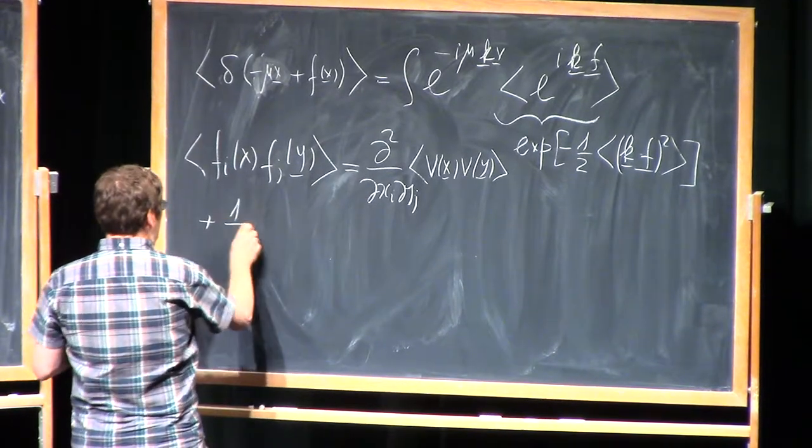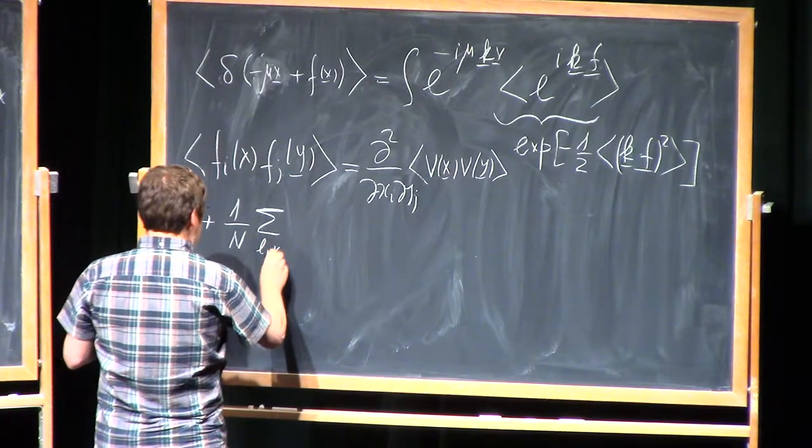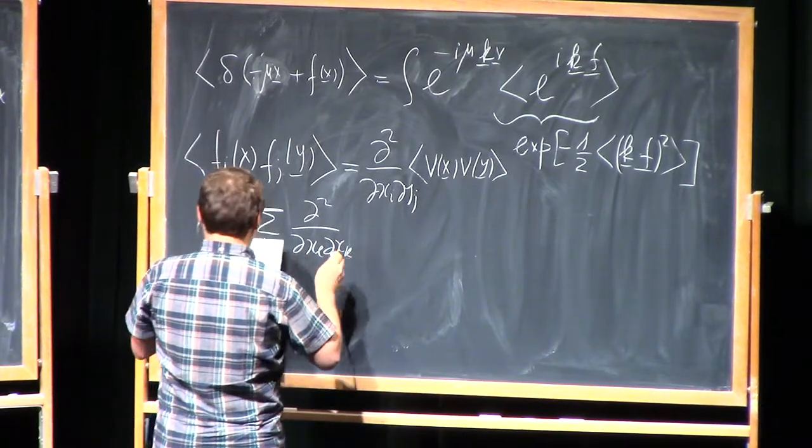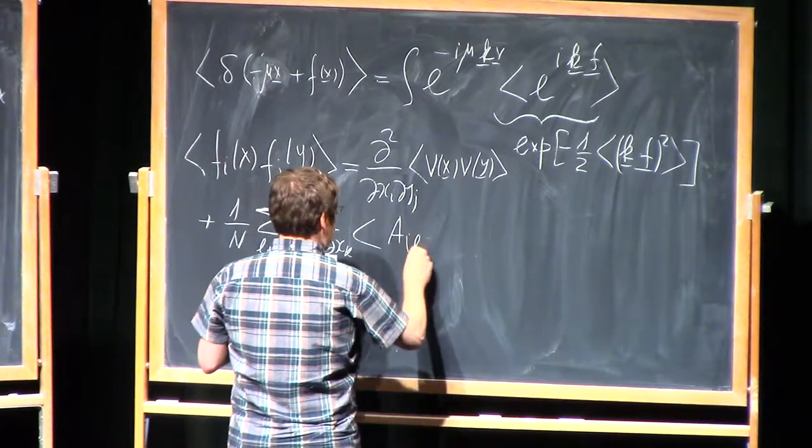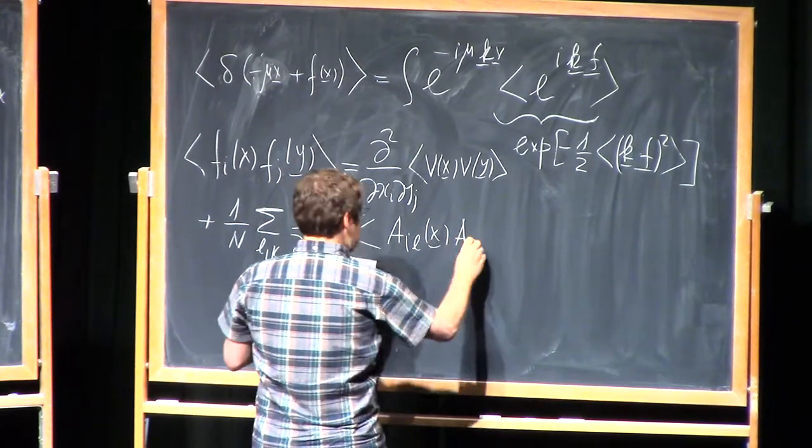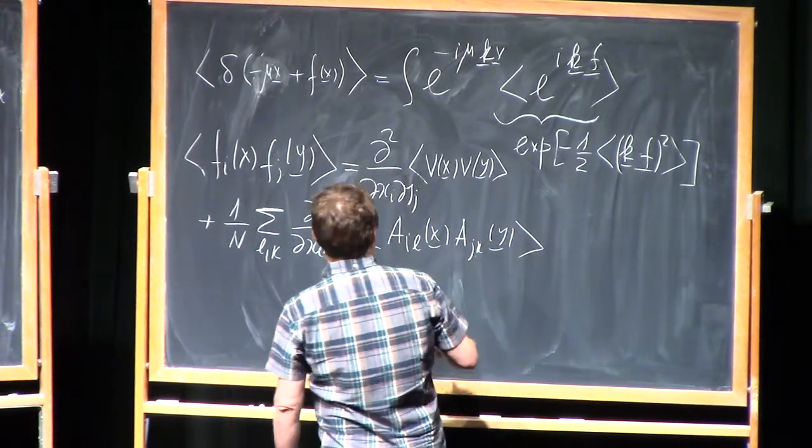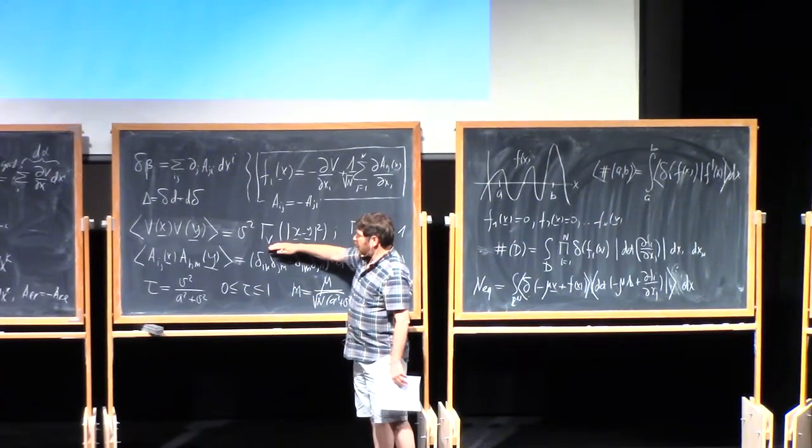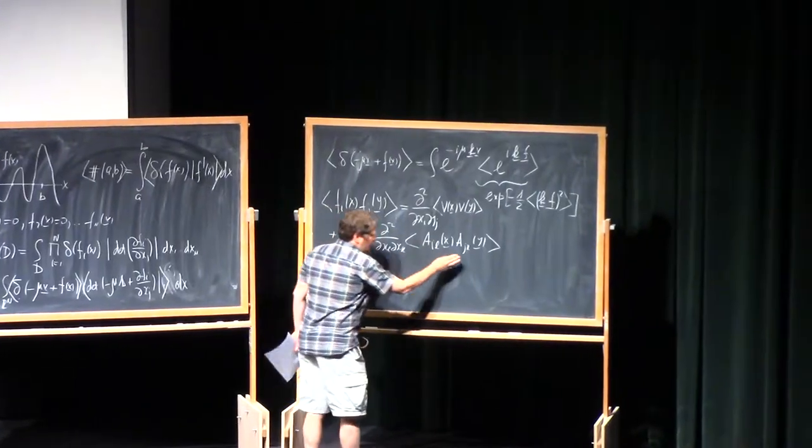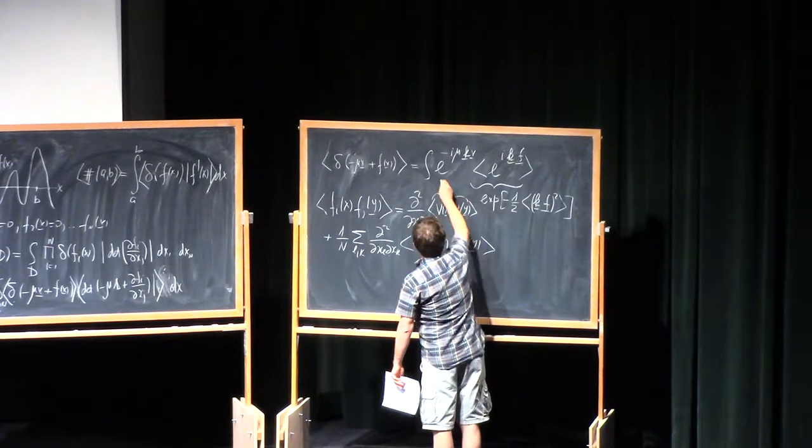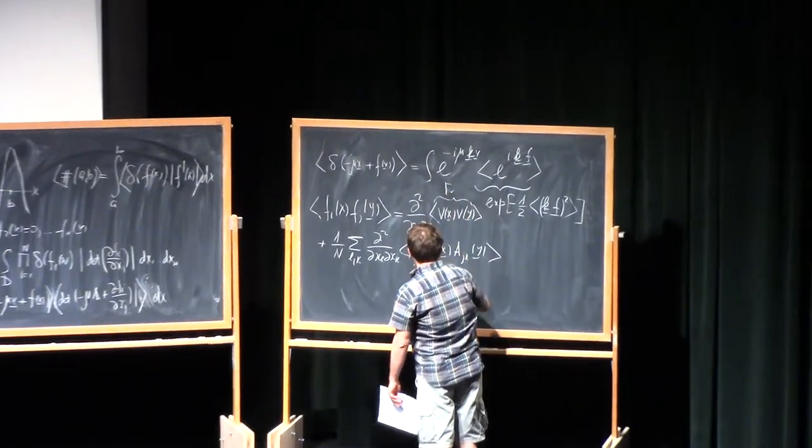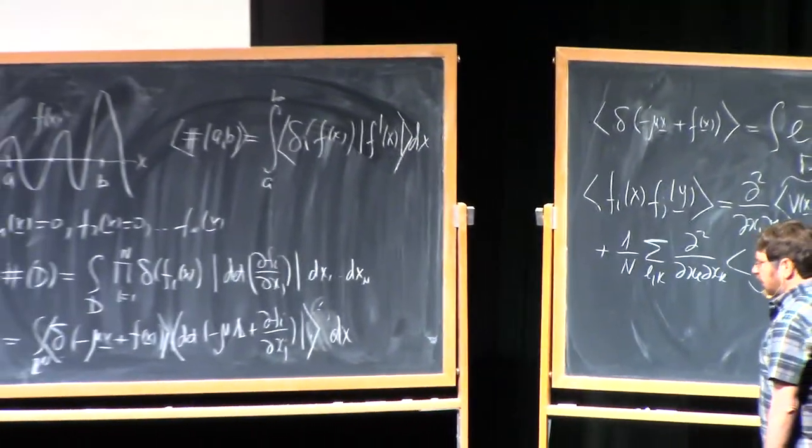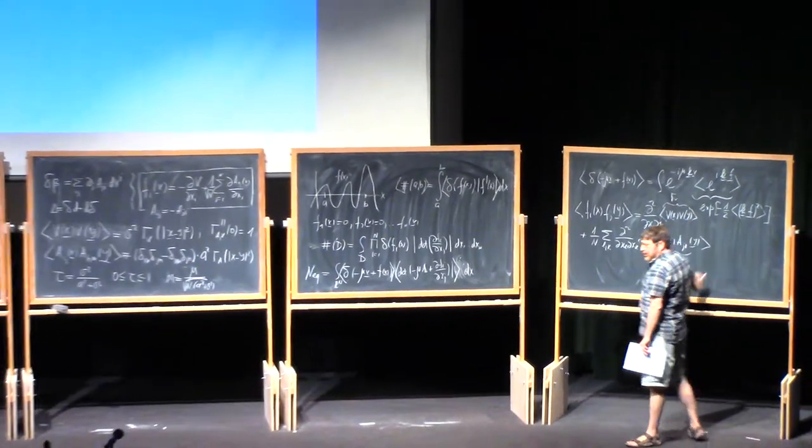So similar term, one over n sum over l k, just of covariance of the fields: a_i,l(x), a_j,k(y). Basically you need to differentiate this covariance kernel gamma_v, and this is gamma_v, proportional with this delta functional prefactor proportional to gamma_a.